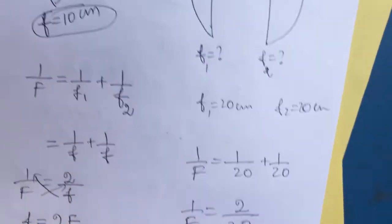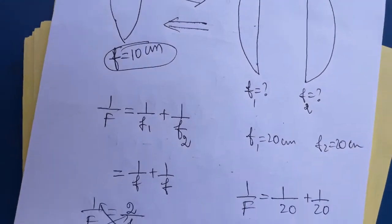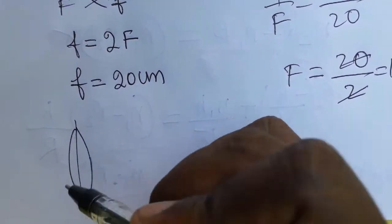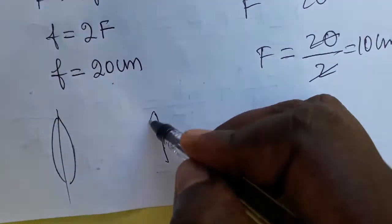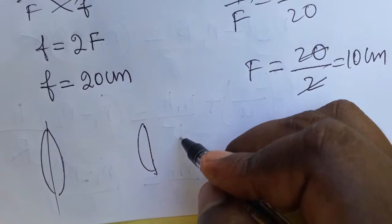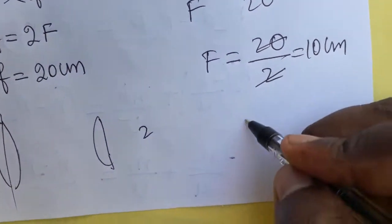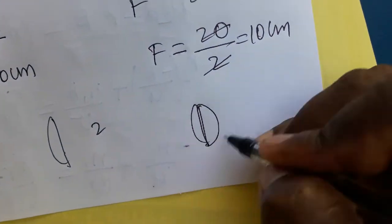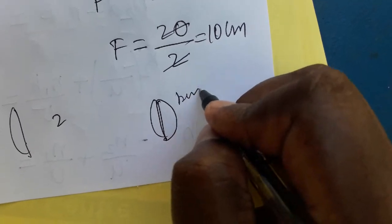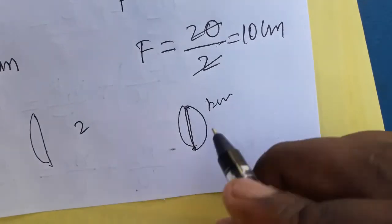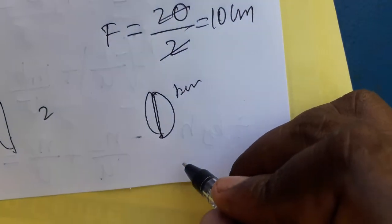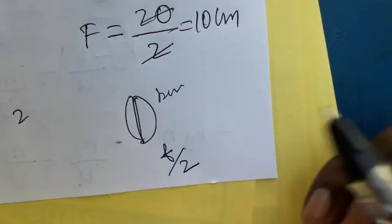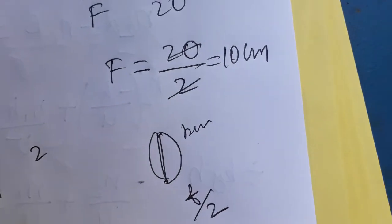So from this, what we learned: for a biconvex lens, when we split it into half lenses, the focal length increases to twice the original. And when we combine two plano-convex lenses into a biconvex lens, the focal length decreases by half. Thank you.